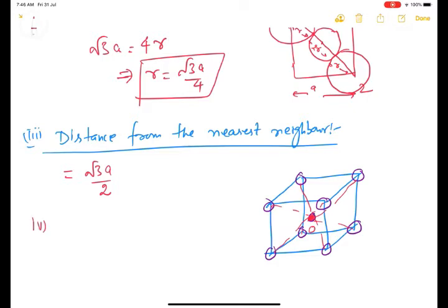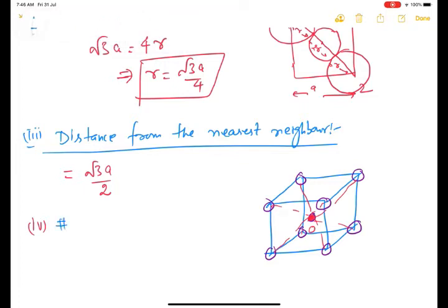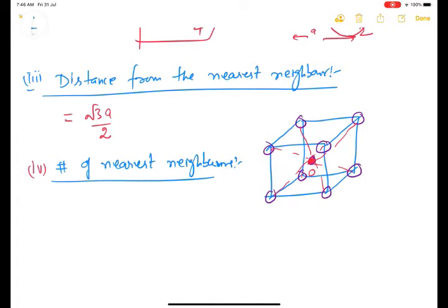The fourth thing we would like to find out is the number of nearest neighbors, or first nearest neighbors. We have just established that all corner atoms are situated at the same distance √3a/2. Since there are eight corners of the cube, the number of nearest neighbors turns out to be eight.